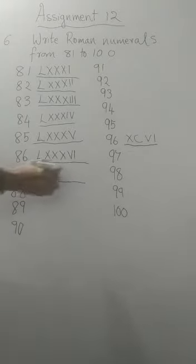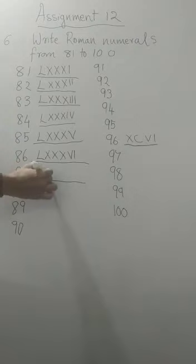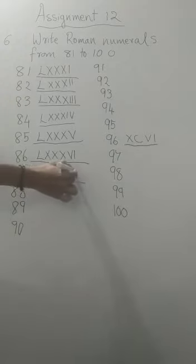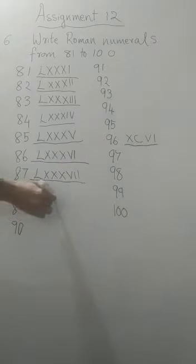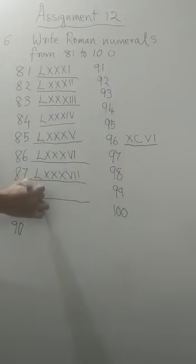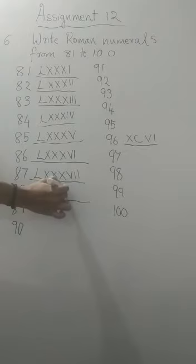Next one, 87. 80. This is 80. And how will you write 7? 5 and 2. This is 7. 88. You will write 80. This is 80 and 5 and 3. That is 88.